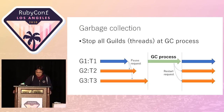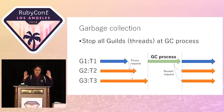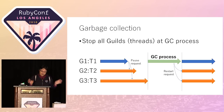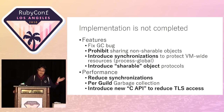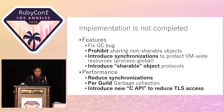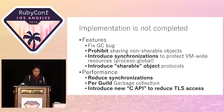Garbage collection is also a big issue. The current implementation stops all Guilds to do garbage collection, meaning we have only one shared object space. We need to fix garbage collection bugs, prohibit sharing of non-shareable objects, introduce synchronization to protect VM-wide resources such as global variables, and introduce shareable object protocols.